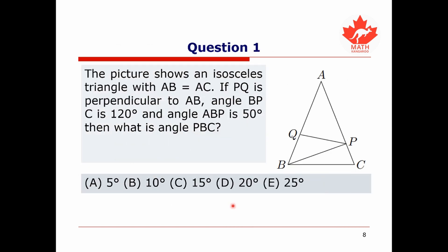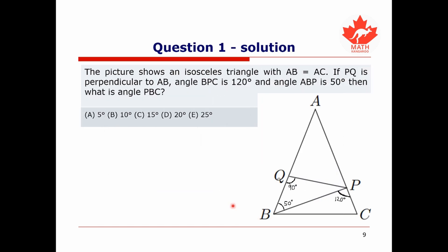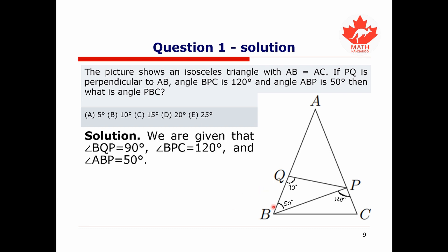Let's hop into the problems. The first one: the picture shows an isosceles triangle in which AB equals AC. If PQ is perpendicular to AB, angle BPC is 120 degrees, and angle ABP is 50 degrees, then what is angle PBC? The first thing we can do is label our diagram with the angles we know. Angle BQP is 90 degrees because PQ is perpendicular to AB. We're also given that angle BPC is 120 degrees and angle ABP is 50 degrees.